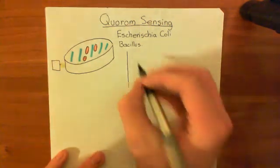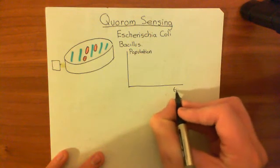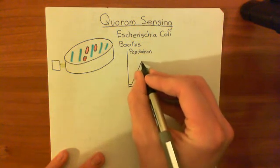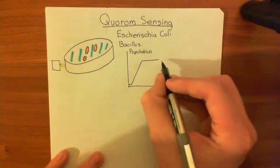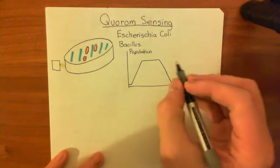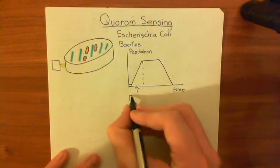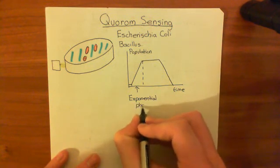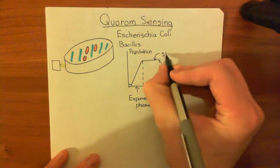If we plot population versus time on a graph, what we find is that the population starts off low, then goes up and up - and then it stops, going to this stationary phase. Then eventually they use all the nutrients on the plate and they start dying - this is the death phase. So we can divide it into different phases: the phase where the bacterial population is growing rapidly is the exponential phase, then there is the stationary phase where the population stops growing but they don't start dying yet.